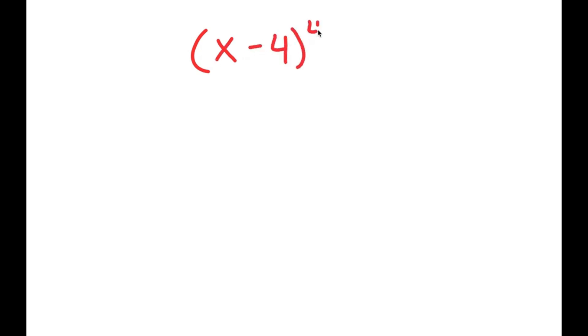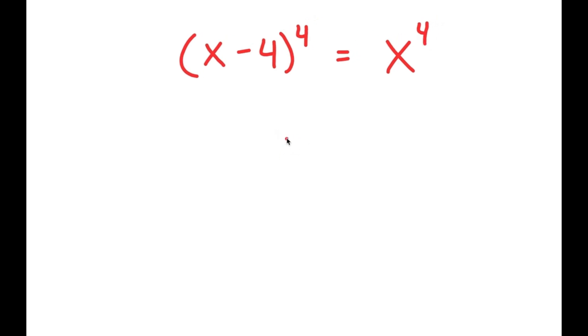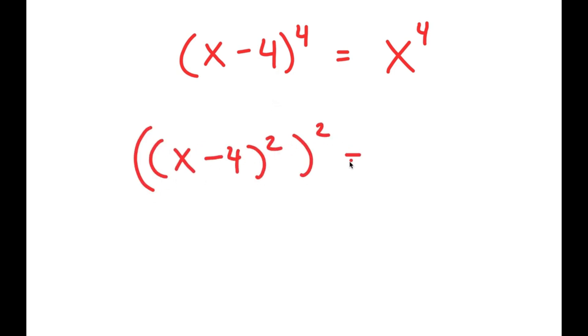In this video, I'm going to solve the problem (x minus 4) to the power of 4 is equal to x to the power of 4. To solve this, I'm going to start by rewriting this as (x minus 4) squared to the power of 2 is equal to x to the power of 2, to the power of 2.